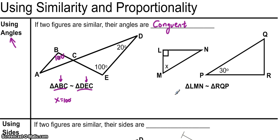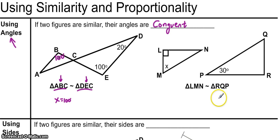Now that you've seen one example of how we can use similarity and angles to solve a geometric problem, go ahead and try the second problem by yourself. Pause the video here, the answers will be coming up in 3, 2, 1.